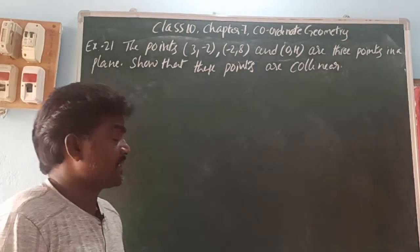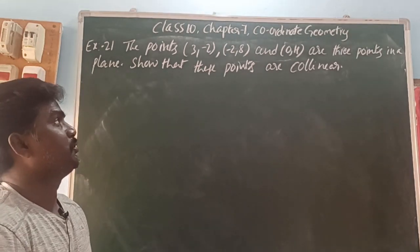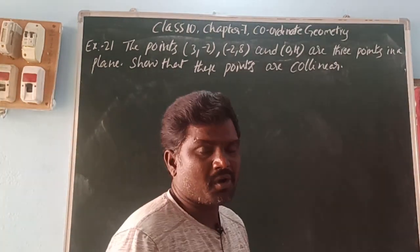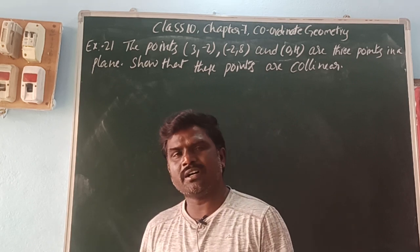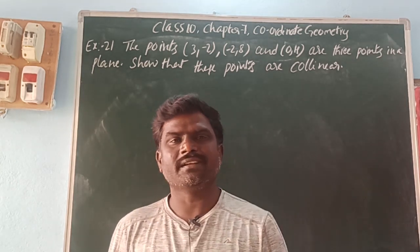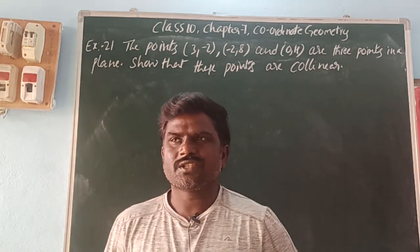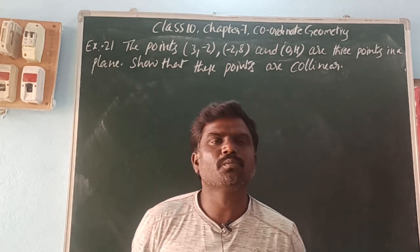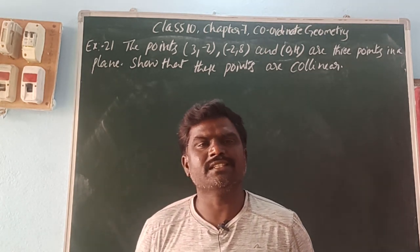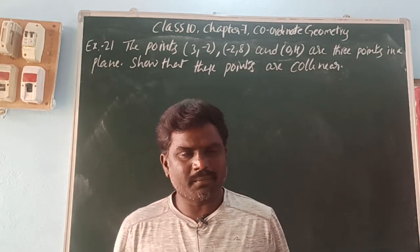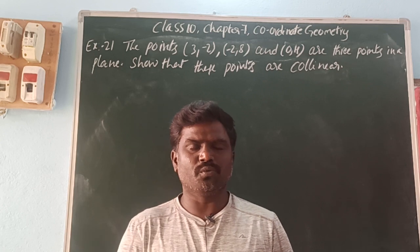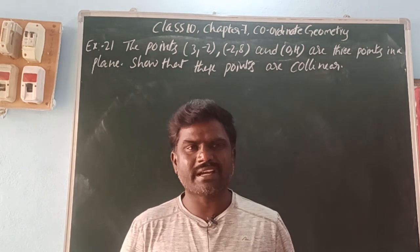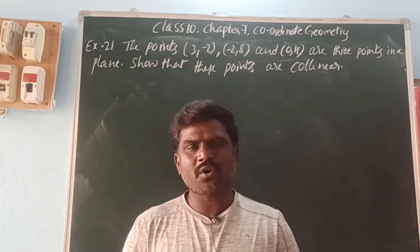Example 21: The points (3, -2), (-2, 8) and (0, 4) are three points in a plane. Show that these points are collinear. Collinear points are all points lying on the same line. There are two methods: one using distance between points, and another using area of triangle = 0. If the area of the triangle is 0, the points are collinear. Alternatively, if AB + BC equals AC, the points are also collinear.